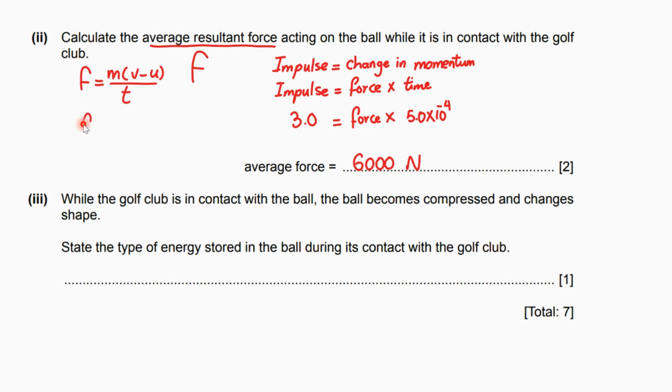It's easy to substitute this one as well. 0.046 for the mass times the velocity, or the change in velocity, which is 65, divided by the time taken, which is 5 times 10 to the negative 4. It's going to give us the same final answer.